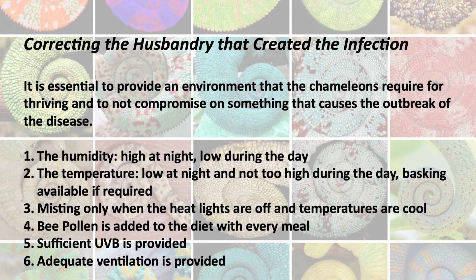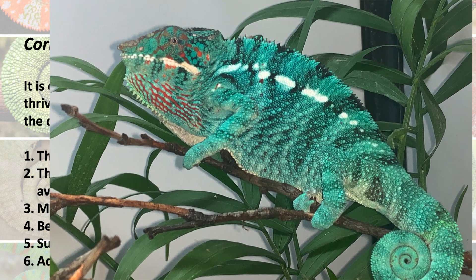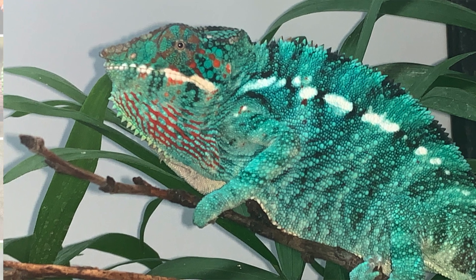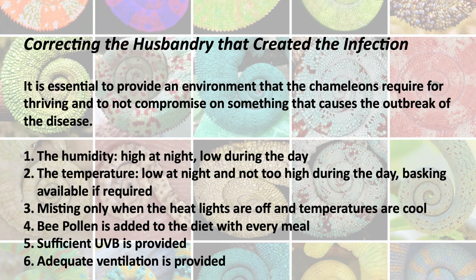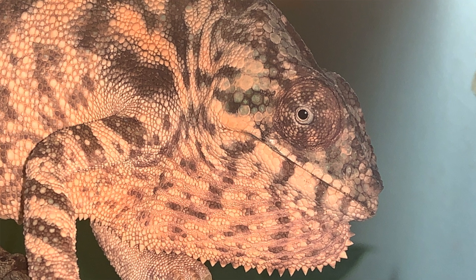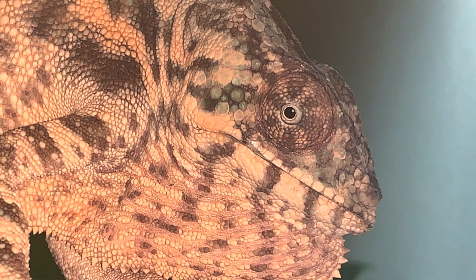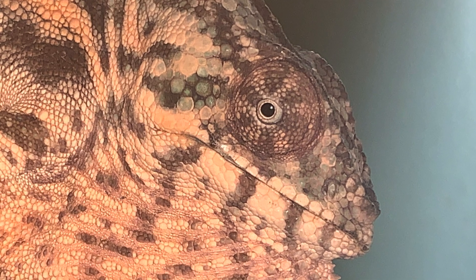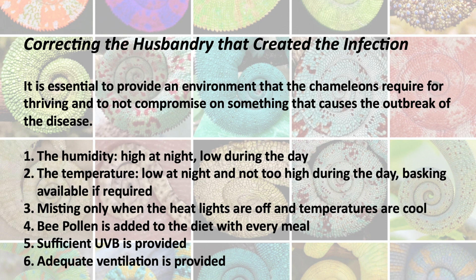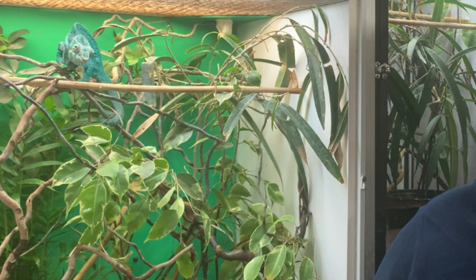If we fix the disease and treat the bacteria that caused it, we must return the animal to a cage that is not the same as before, because the previous conditions actually caused the disease. We need to correct the husbandry that created the infection. It is essential to provide an environment that chameleons require for thriving. There are also six important steps: first, humidity must be high at night and low during the day; second, temperature must be low at night and not too high during the day, while basking must be available if required.